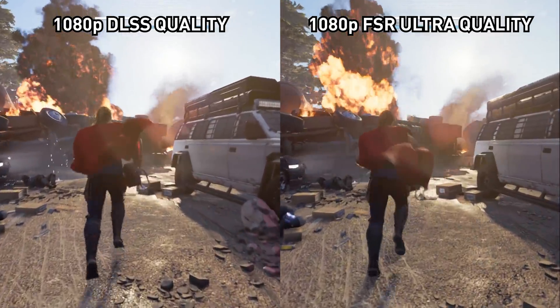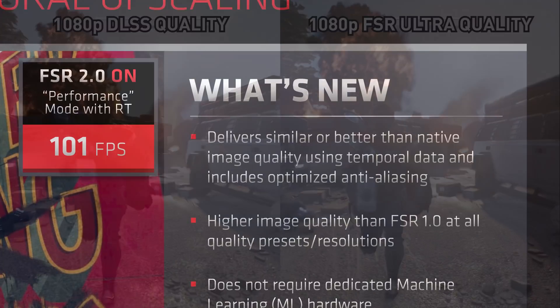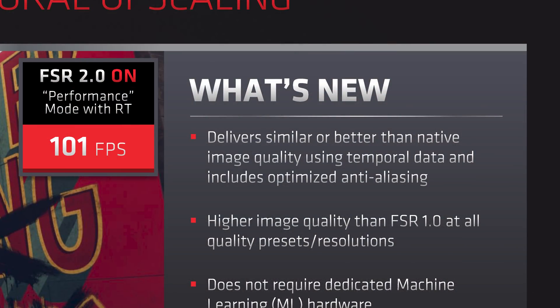Many of these image quality issues should be improved with the switch from spatial to temporal. AMD claims FSR 2.0 should deliver similar or better than native image quality, including optimized anti-aliasing, suggesting FSR 2.0 will replace the game's built-in AA when activated, like DLSS. However, saying something produces better than native image quality is a bit of a buzzword. We've seen NVIDIA claim this countless times and it isn't always the case in practice. We'll have to explore that when we get hands-on time, but at the very least they are expecting FSR 2.0 to deliver better image quality than FSR 1.0 at all resolutions and presets.